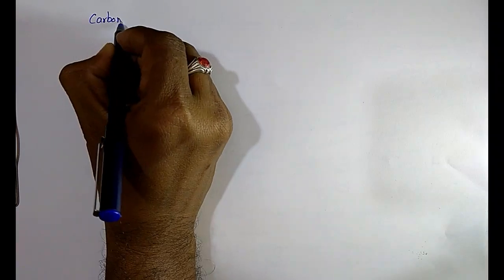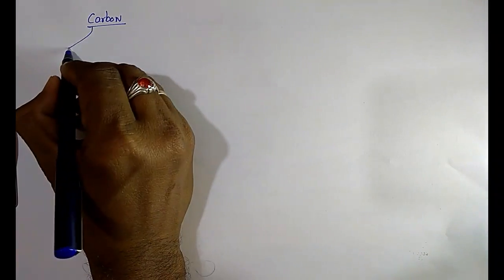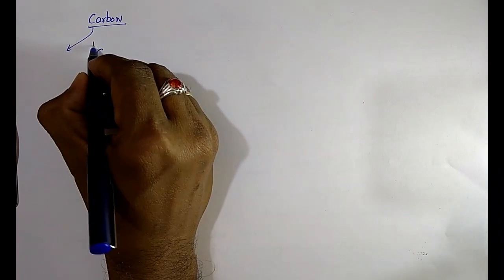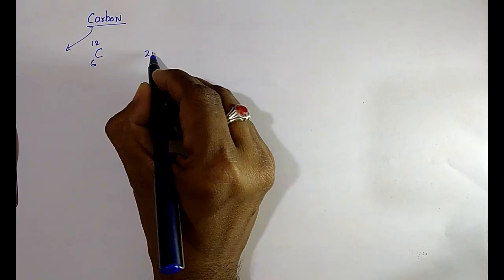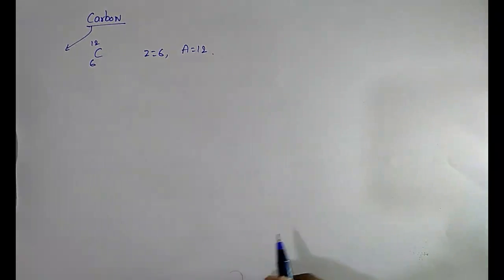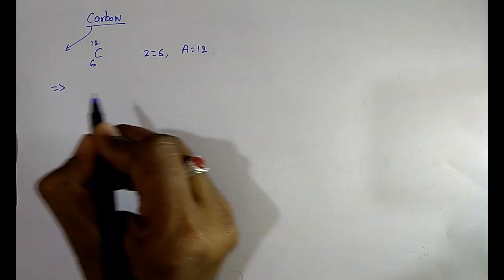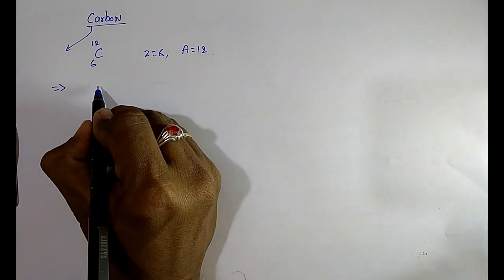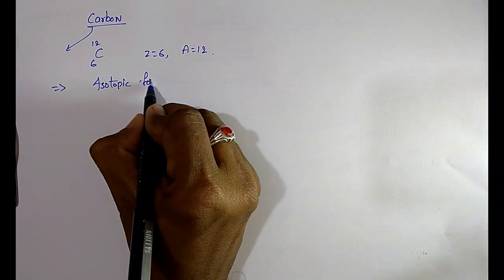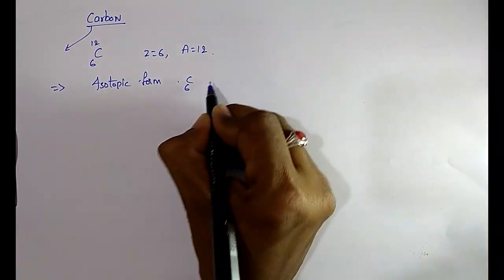Among non-metals, the very important one is carbon. The atomic number of carbon is 6 and mass number is 12. Carbon also exists in isotopic forms: C-12, C-13, and C-14.